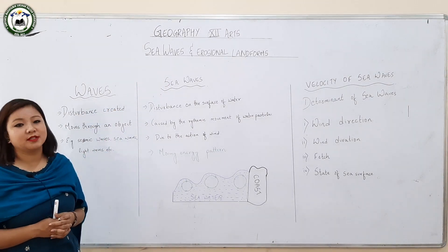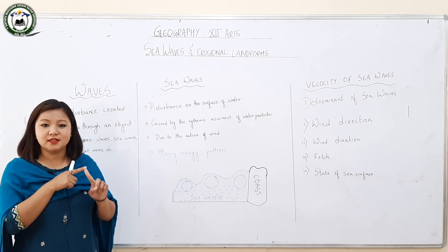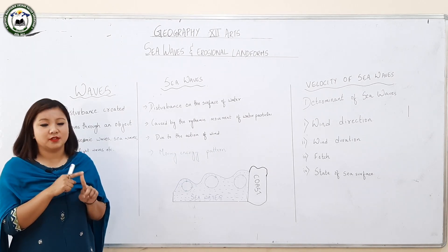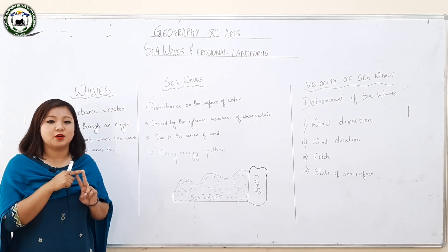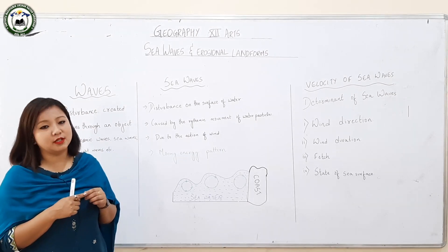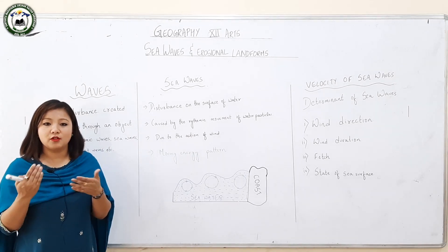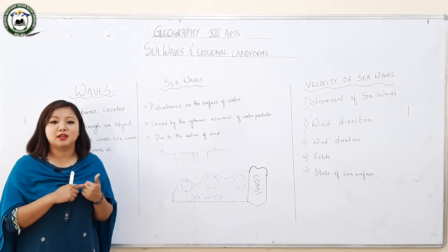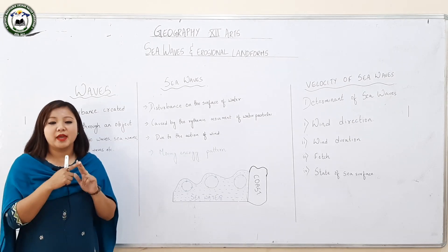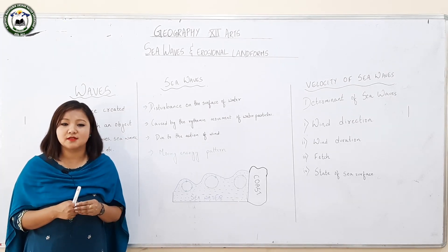We are all aware that the earth's surface or the earth's crust is divided into two parts: the continental part and the water bodies. The water bodies consist of about 71% of the earth's crust whereas the continental bodies consist of about 29%. The continental landforms are always changing — they are dynamic in nature, created, destructed, and recreated with the help of several mechanisms and agents.